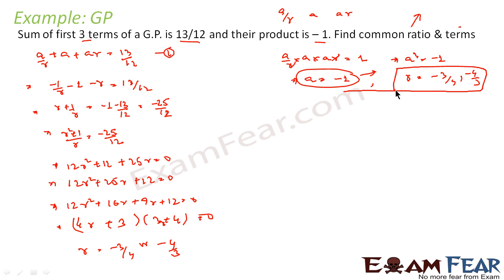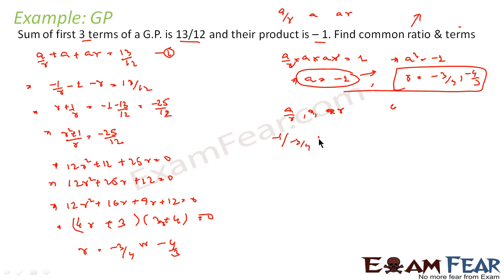Assuming r = minus 3/4, the three terms a/r, a, and ar are: a/r = minus 1 ÷ (minus 3/4) = 4/3, a = minus 1, and ar = minus 1 × (minus 3/4) = 3/4. So the first set of terms is 4/3, minus 1, and 3/4.